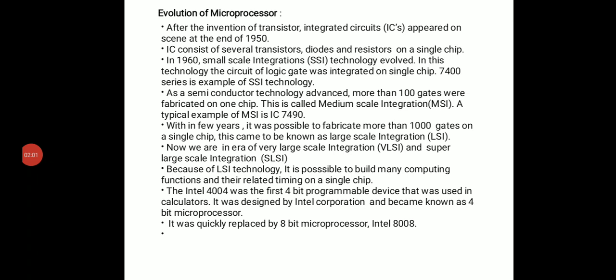IC consists of several transistors, diodes, and resistors on a single chip — all electronic components. This is a technique where many devices can be placed on a very small area. Then in the 1960s, Small Scale Integration (SSI) technology evolved. In this technology, the circuit of logic gates was integrated on a single chip. The 7400 series is an example of SSI technology.